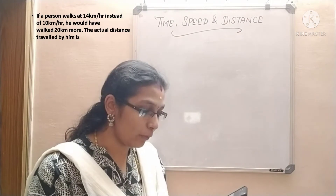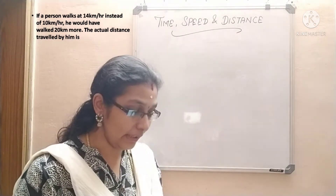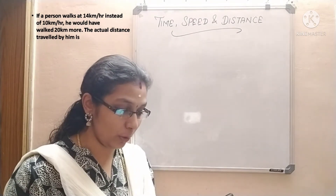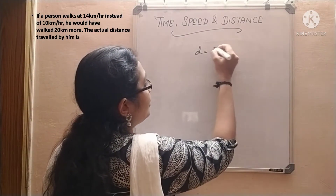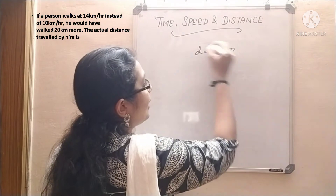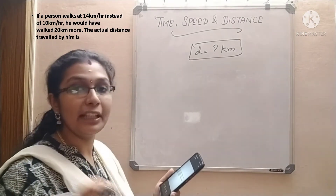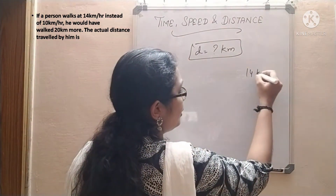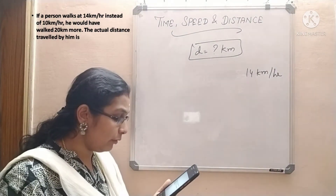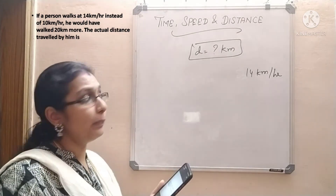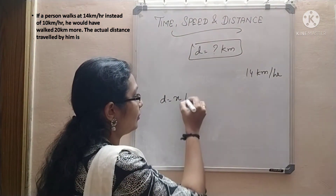Next question. If a person walks at 14 kilometer per hour instead of 10 kilometer per hour, he would have walked 20 kilometer more. The actual distance traveled by him must be? We need to find the distance in kilometers. Actually, he is walking at 10 kilometer per hour — a certain distance. If instead he had walked at 14 kilometer per hour, he would have covered an extra 20 kilometers. We don't have the actual distance, so let us consider it to be X kilometers.